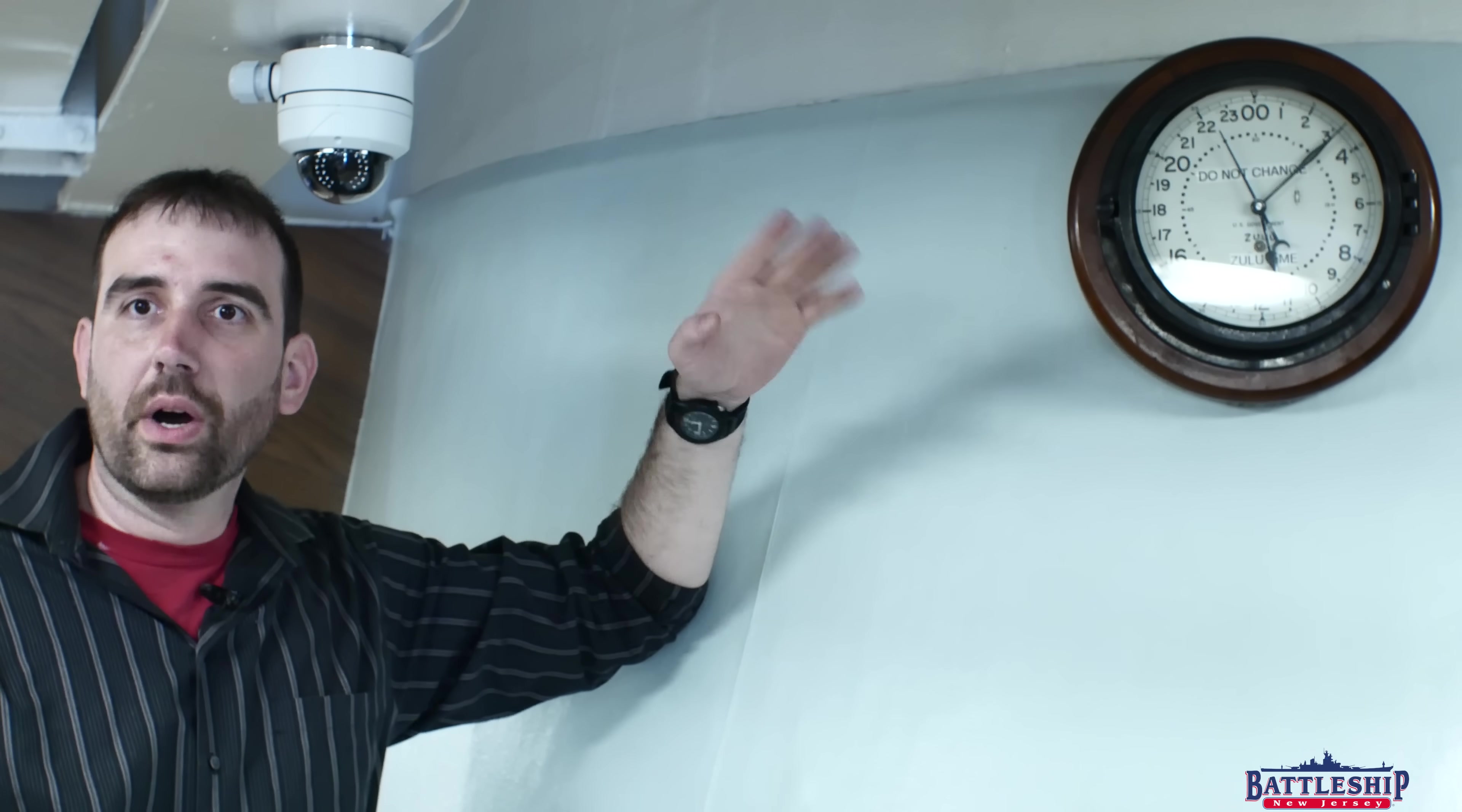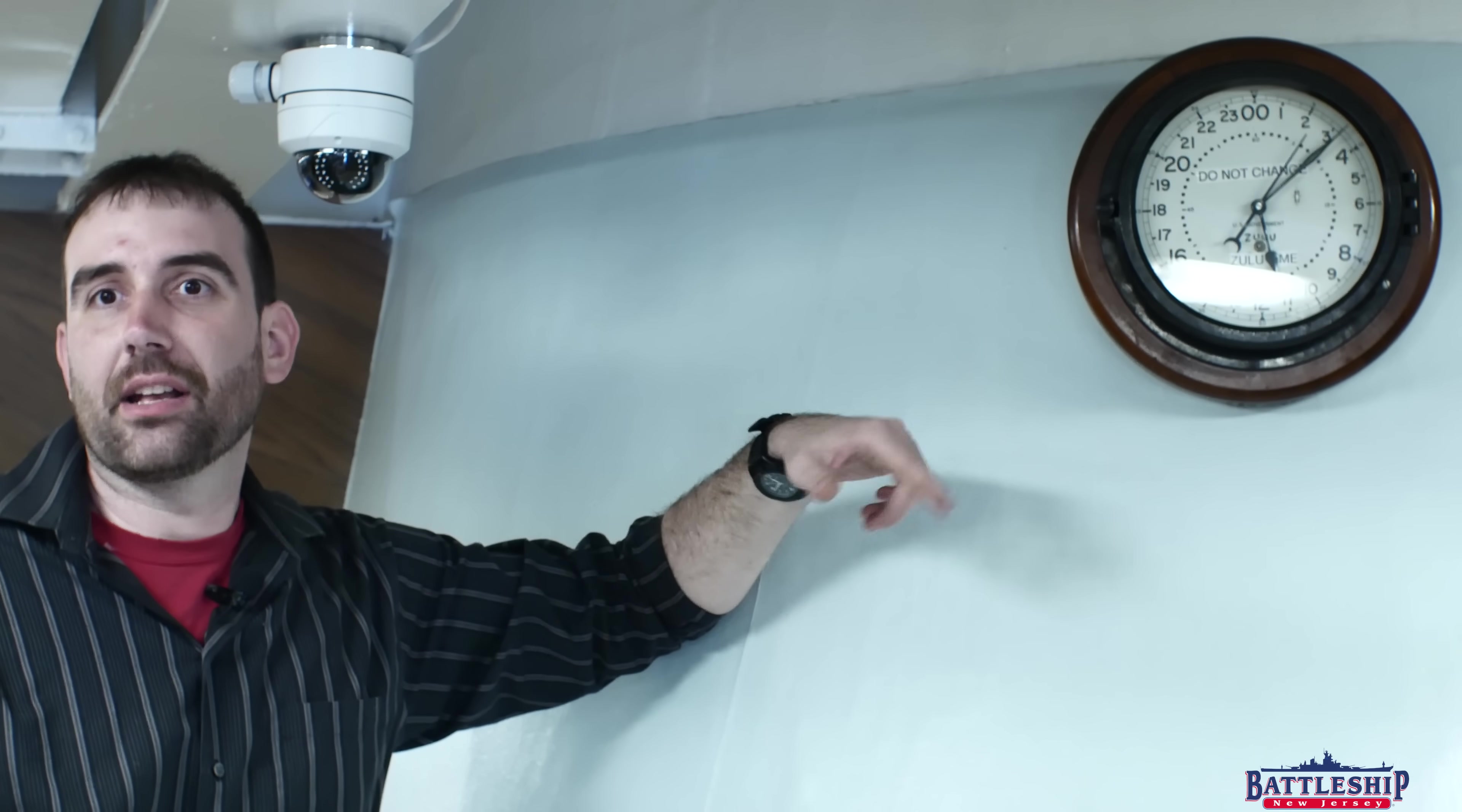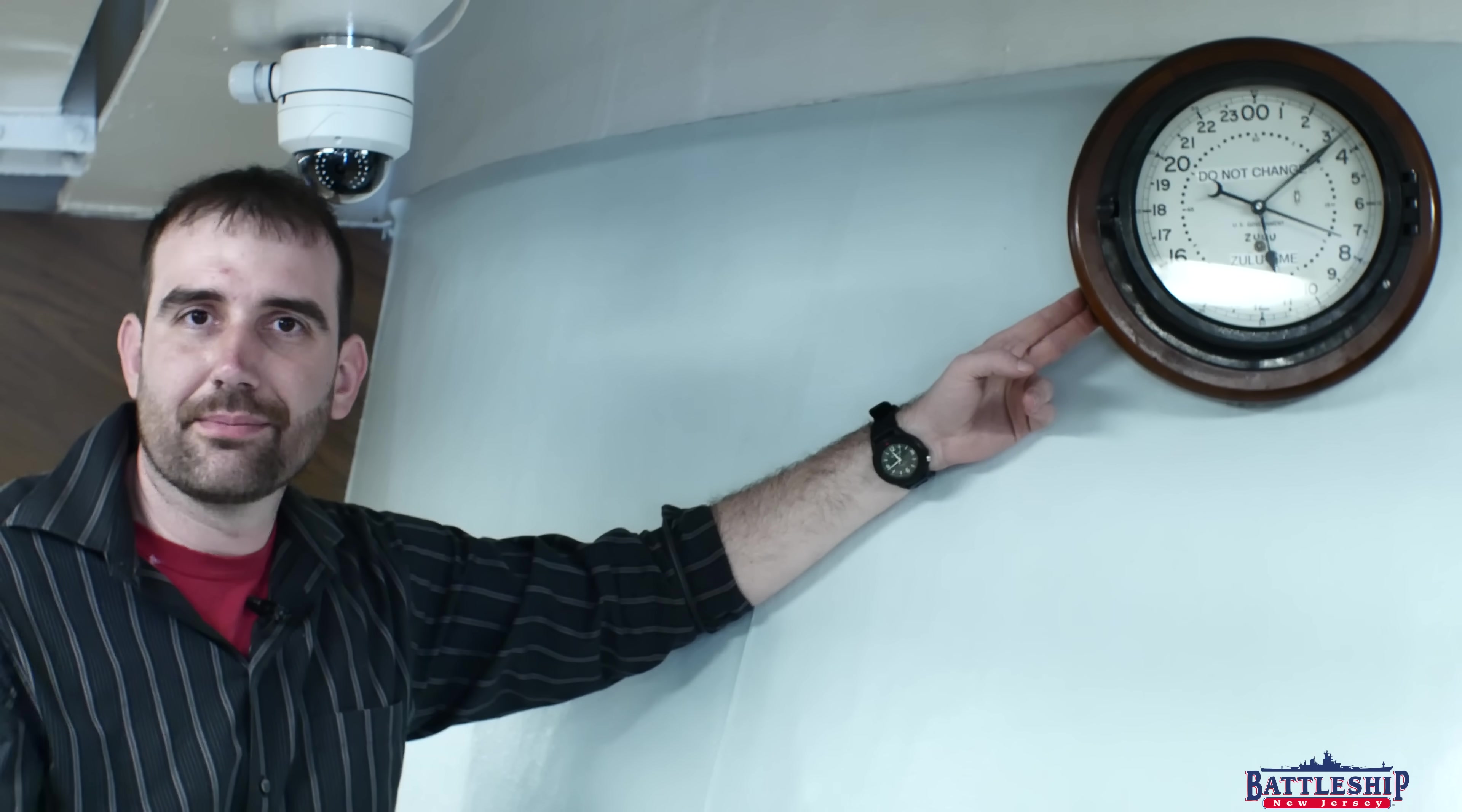Midnight would be zero, so 1 a.m. is 1. And as you go around, 12 p.m., noon is 12. And instead of going to 1 again at 1 p.m., that becomes 1,300 hours. And it keeps on going around until you get to 2,359 hours, 11:59 p.m. And then when it crosses over to midnight, it becomes zero again.